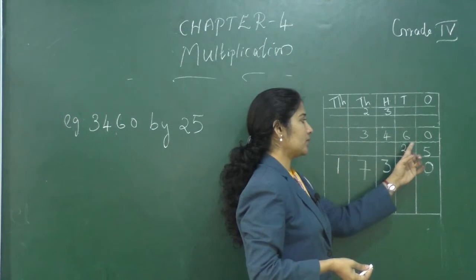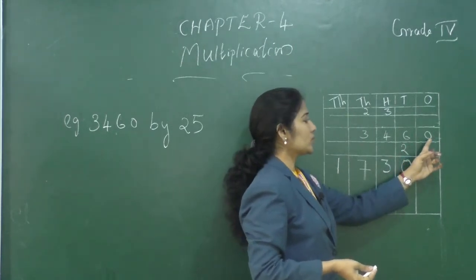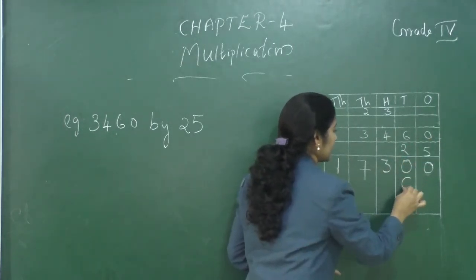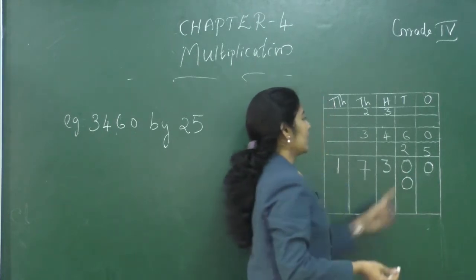Next, we have to multiply with the 2. What is 2 into 0? 0. You can write at the 10's place down, 0.